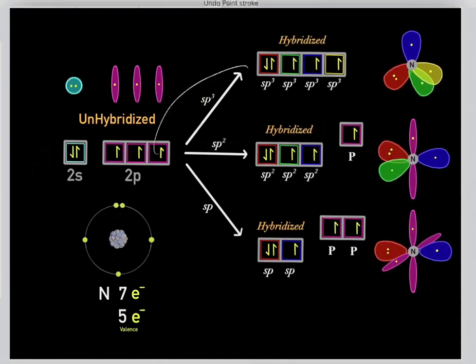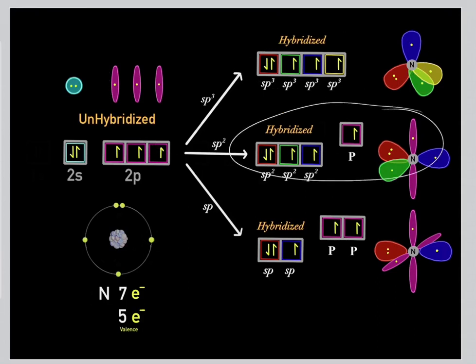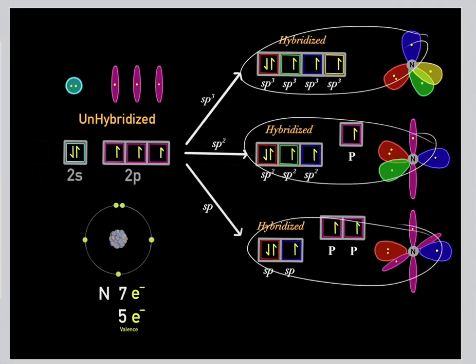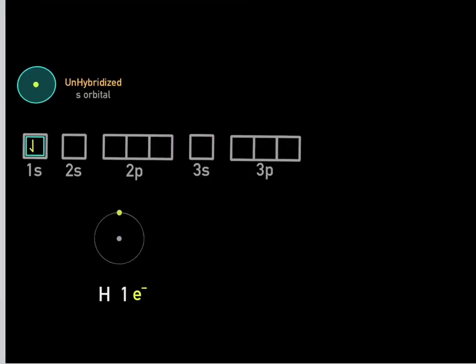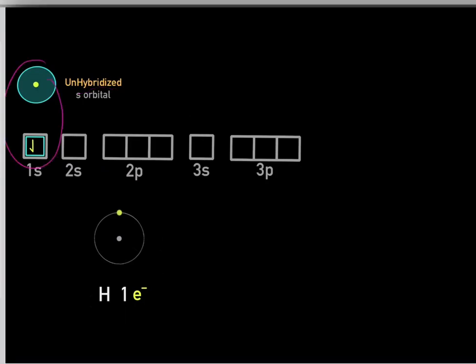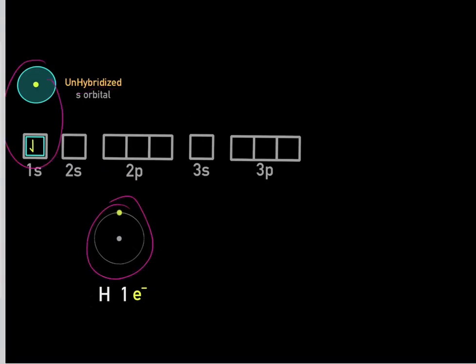There are three ways nitrogen's orbitals can hybridize: to form sp3, sp2, or sp hybridized orbitals. Hydrogen is an exception because it only has one electron and one s orbital, so it doesn't have any orbitals to hybridize with. It's left with an unhybridized s orbital, and that's where you'll find hydrogen's electron.